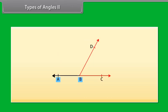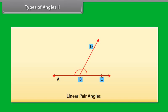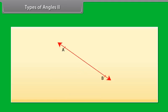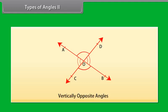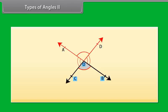If the non-common arms BA and BC form a line, then the angles ABD and DBC are called a linear pair of angles. When two lines, say AB and CD, intersect each other at a point O, then the angles formed are called vertically opposite angles. There are two pairs of vertically opposite angles: one pair is angle AOD and angle BOC, and the other pair is angle AOC and angle BOD.